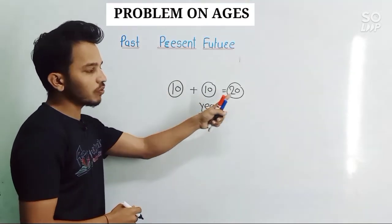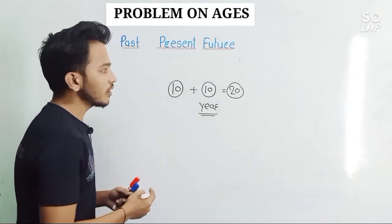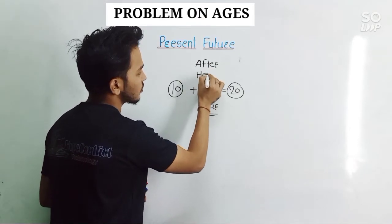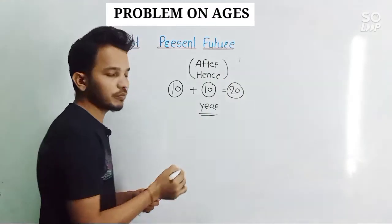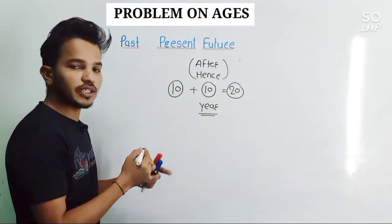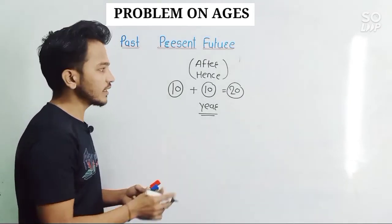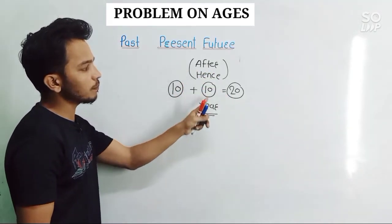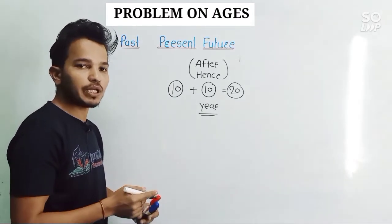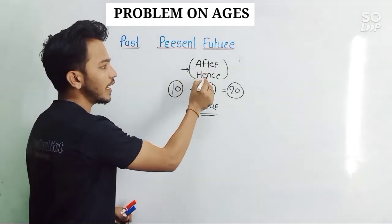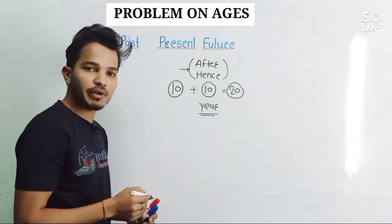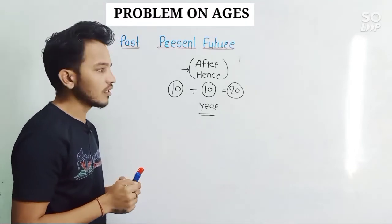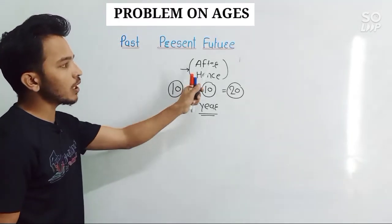The words used here are 'after' and 'hence' — both these words define and determine the future age of the person. So whenever we see 'after' or 'hence' in any question, it means we need to calculate the future age. Every question will use one of these words to indicate future age calculation.